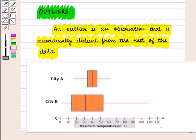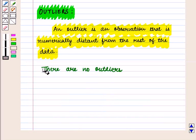Since there are no outlying values in the two distributions, we say that there are no outliers.